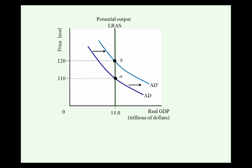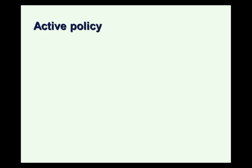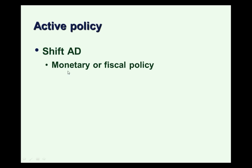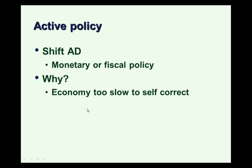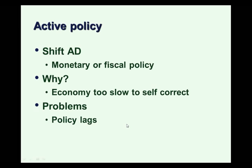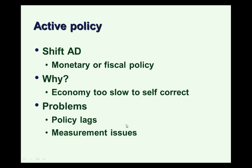Now, why use monetary and fiscal policy? Why not wait for self-correction? That debate is referred to as the active versus passive policy debate. People who advocate for active policy advocate for using monetary or fiscal policy to shift aggregate demand. They argue that self-correction sounds great in theory, but in fact it works too slowly — wages and prices aren't flexible enough, and people are suffering while you wait for the economy to self-correct. The problems with active policy include the policy lags we discussed. Monetary policy has a shorter policy lag — the Federal Reserve can act more quickly — but there's still a lag. There are also measurement issues: to know how big the policy should be, we have to know where the economy is with great accuracy.